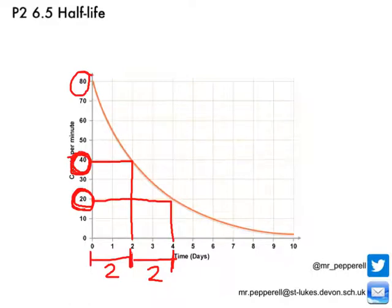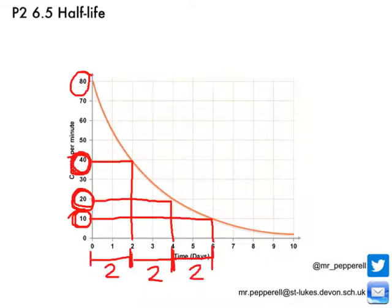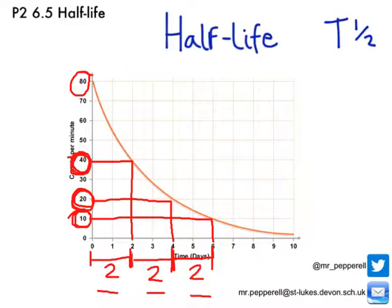Looking again, 20 down to 10 — the count rate is halving again. Going along to day six, we can see it took from the fourth day until the sixth day, so another two days have gone by. It's taken two days for that count rate to half. Therefore, the number of parent atoms have halved. This time period of two days is actually referred to as the half-life.